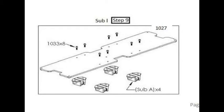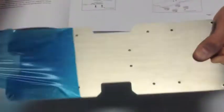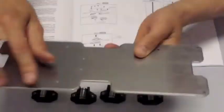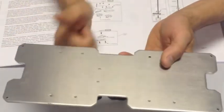Sub-assembly I is the built plate support. You'll want to begin by removing the plastic off of the top and the bottom side. And you'll notice that there is a beveled edge on the built plate support, and you'll want that facing up.